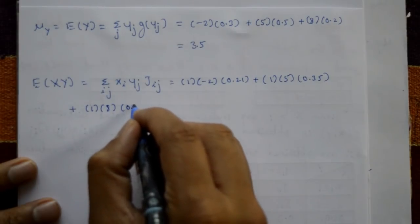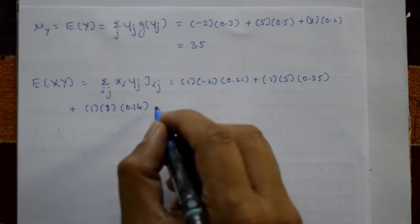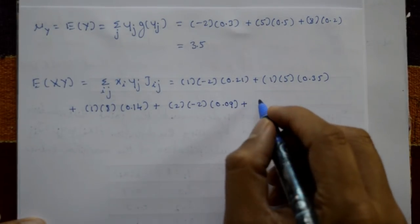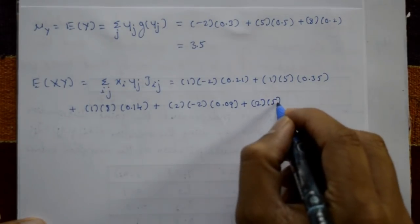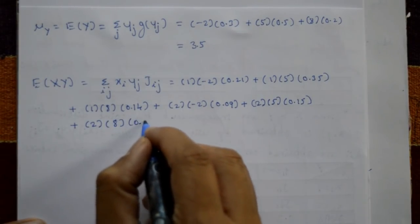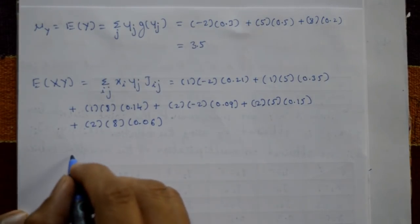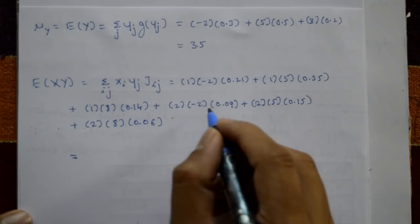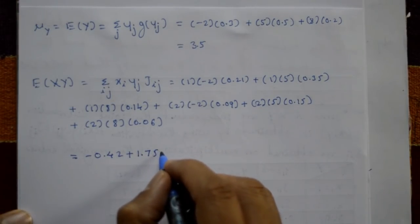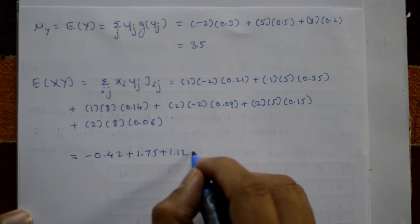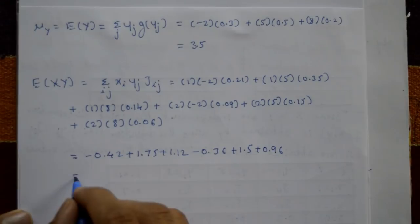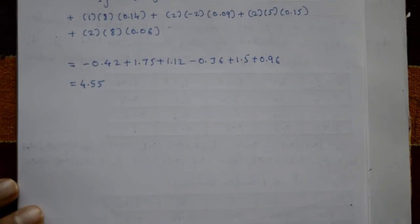Continuing the E[XY] calculation: plus 2 × 5 × 0.15 plus 2 × 8 × 0.06. The six terms sum as: minus 0.42 + 1.75 + 1.12 minus 0.36 + 1.5 + 0.96 = 4.55.